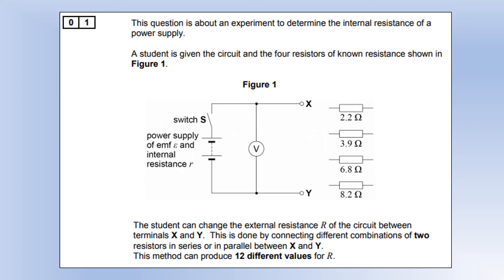This question is about an experiment to determine the internal resistance of a power supply. A student is given a circuit and four resistors of known resistance shown in the diagram. The student can change the external resistance of the circuit between terminals X and Y by connecting different combinations of two resistors in series or in parallel, producing 12 different values of R.